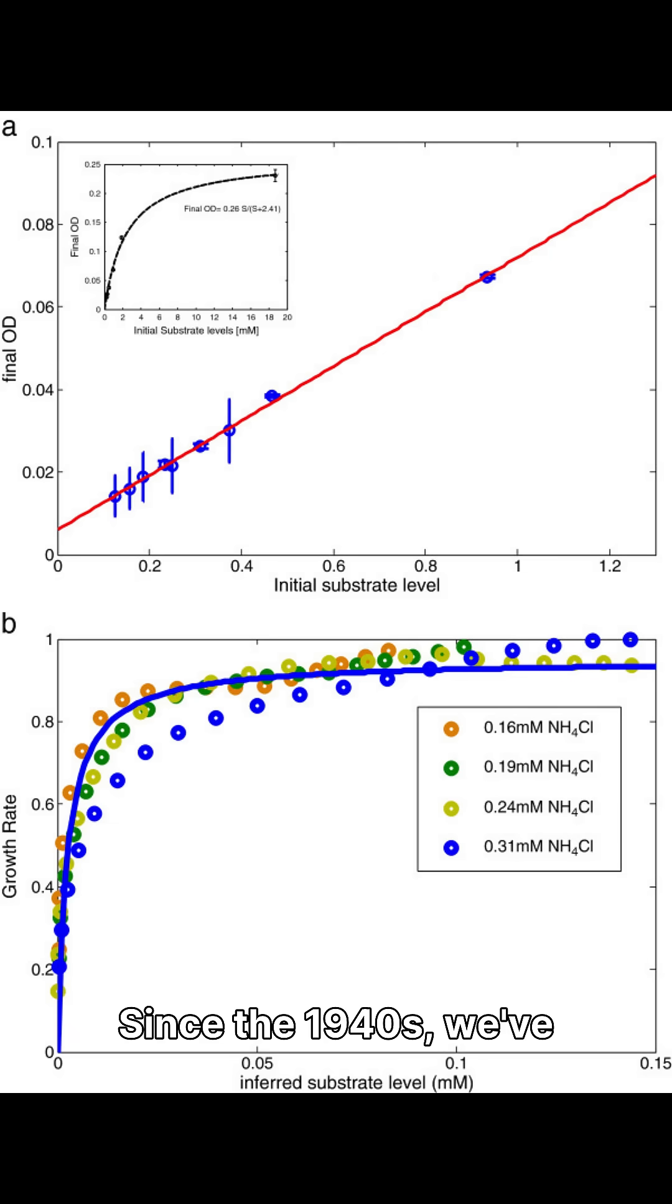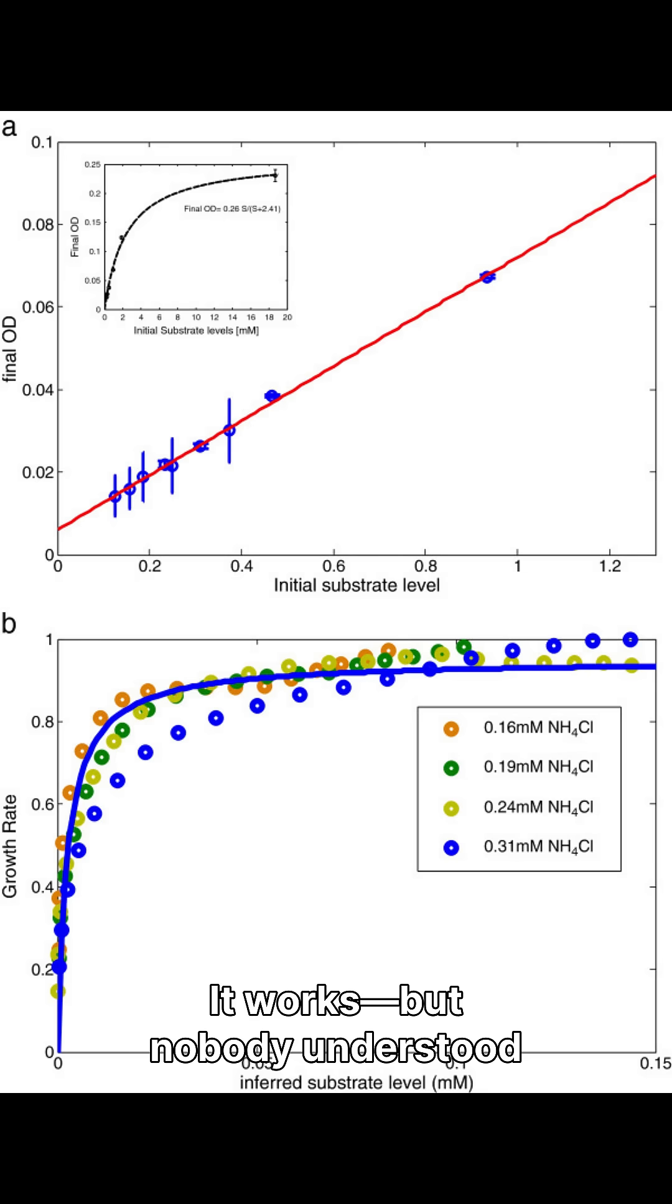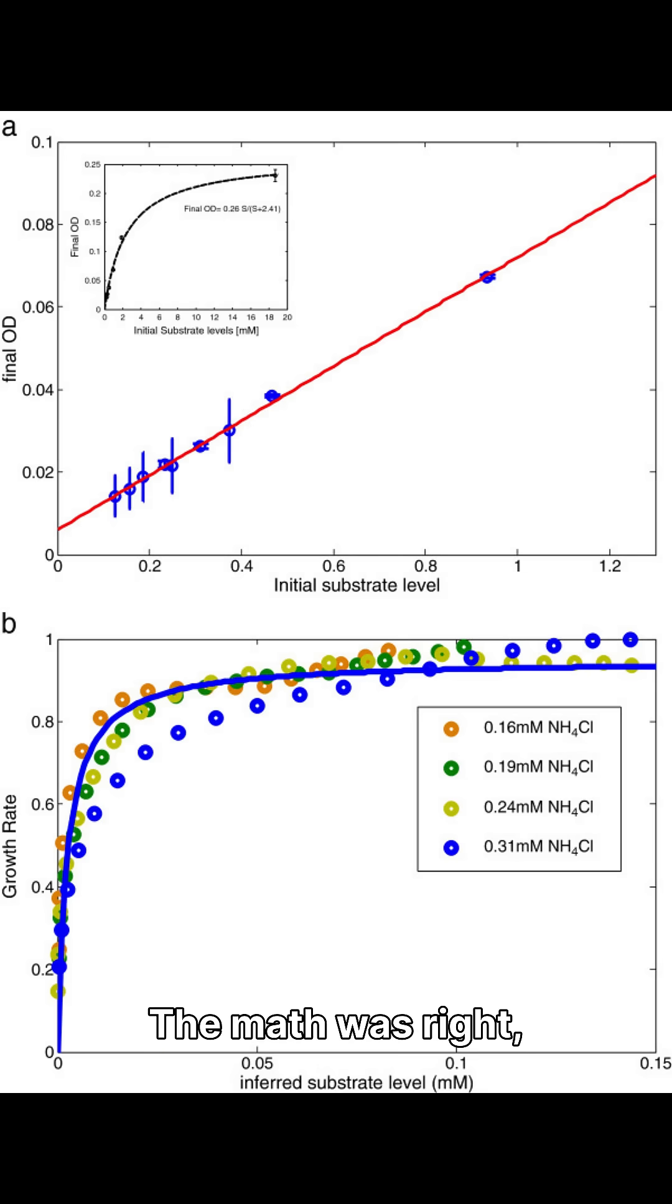Since the 1940s, we've used the mono-equation to predict microbial growth. It works, but nobody understood why. The math was right, but the biology was a mystery.